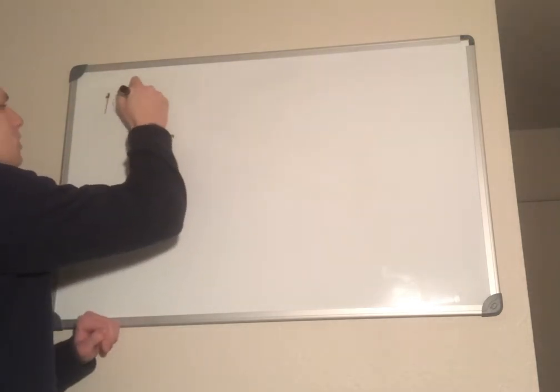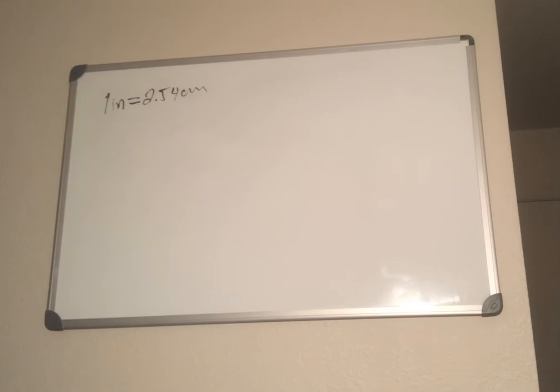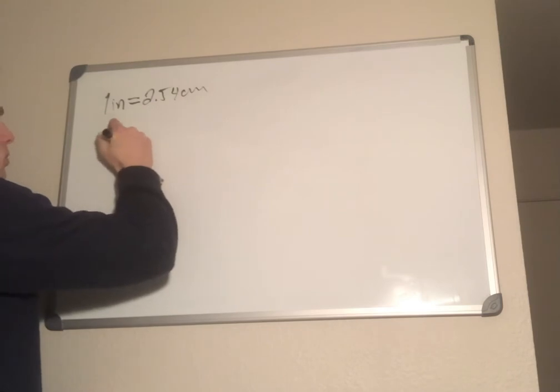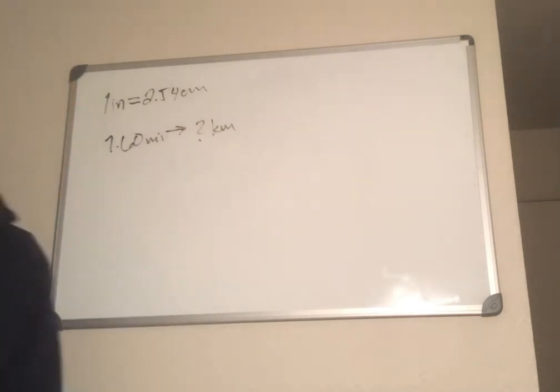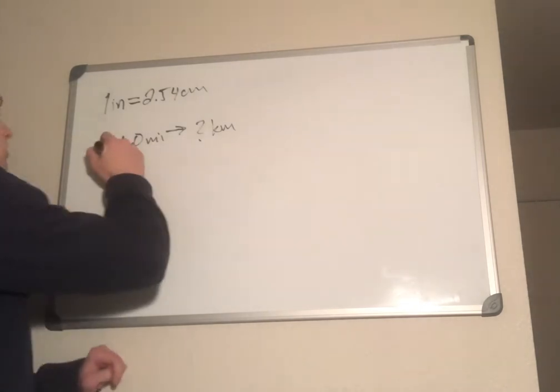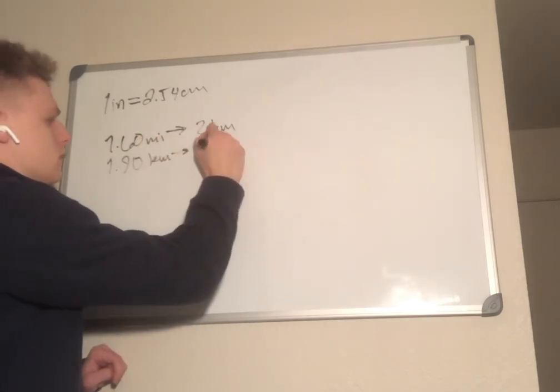First problem, first textbook, first video. I'm just gonna read it out — the problem statement is in the description if you want to see it. Problem 1.1: starting with the definition that 1 inch is equal to 2.54 centimeters, find out the number of kilometers in 1.6 miles.